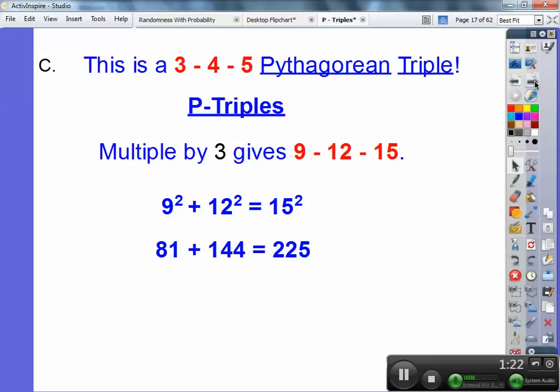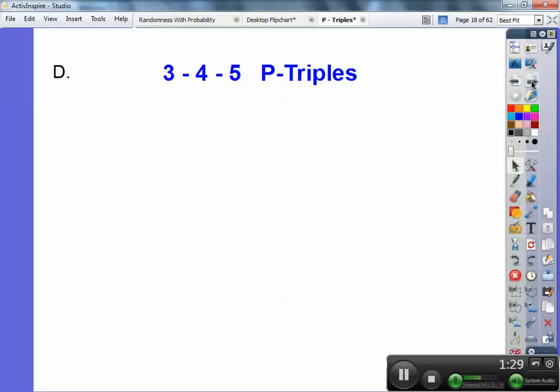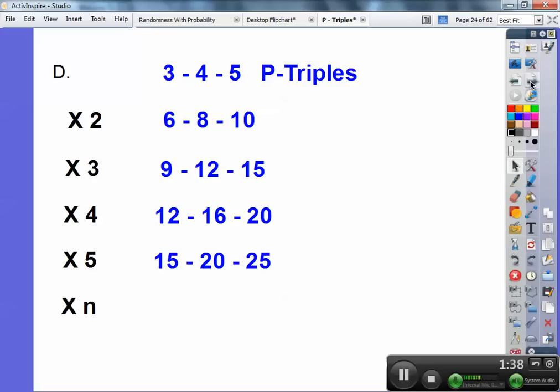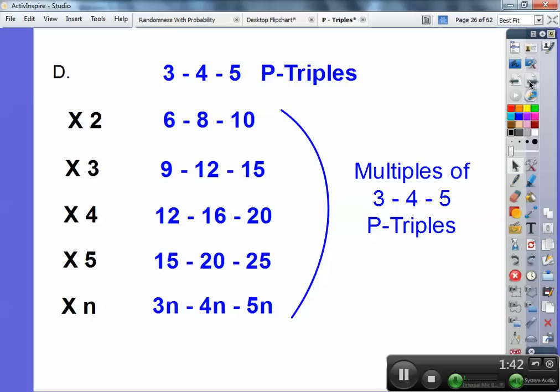So whenever I multiply a P-triple by some constant number, it just gives me more P-triples. So watch, here's 3, 4, 5, times 2, times 3, times 4, times 5, or times anything. It's just going to give me 3, 4, 5 multiples of P-triples.